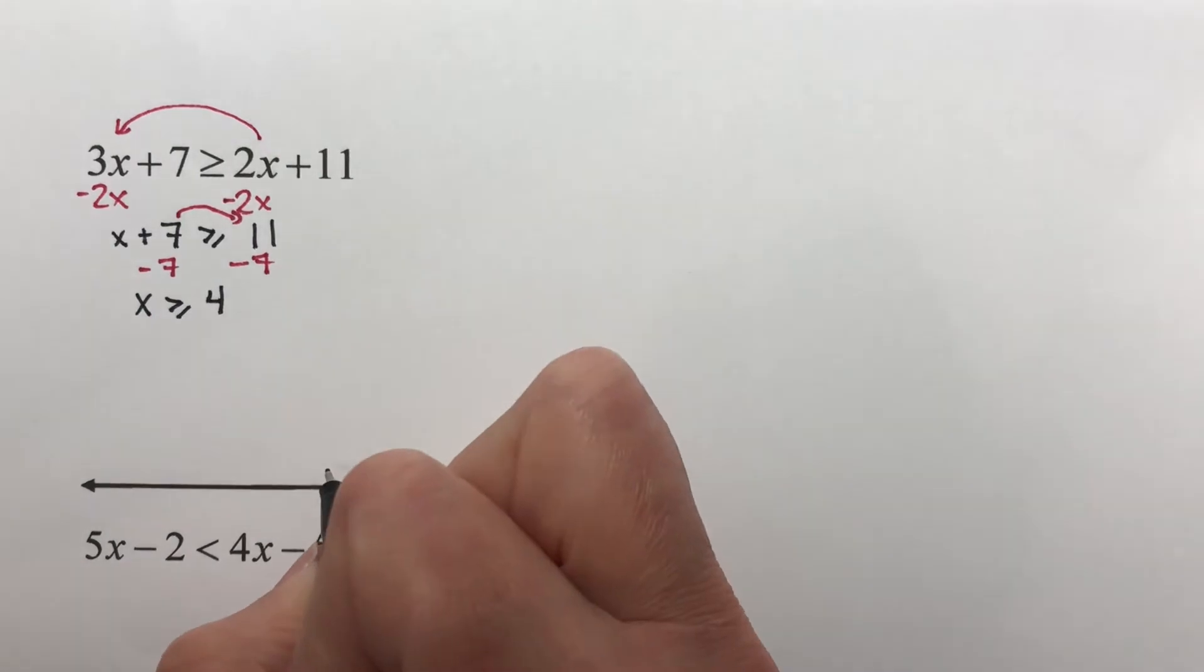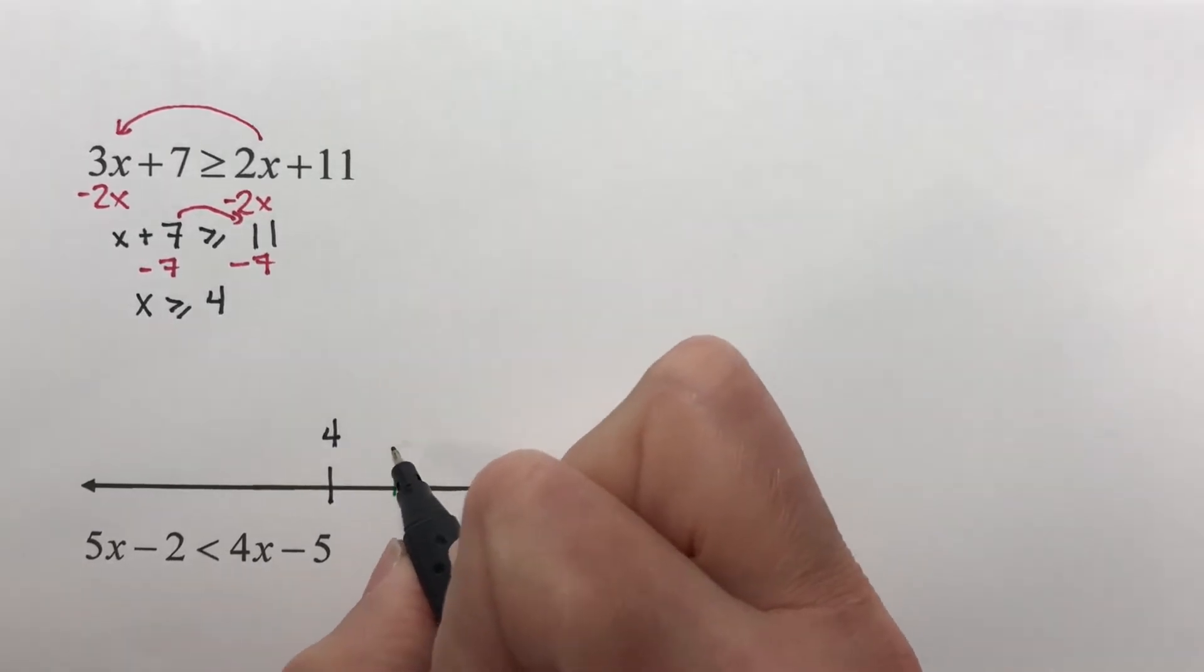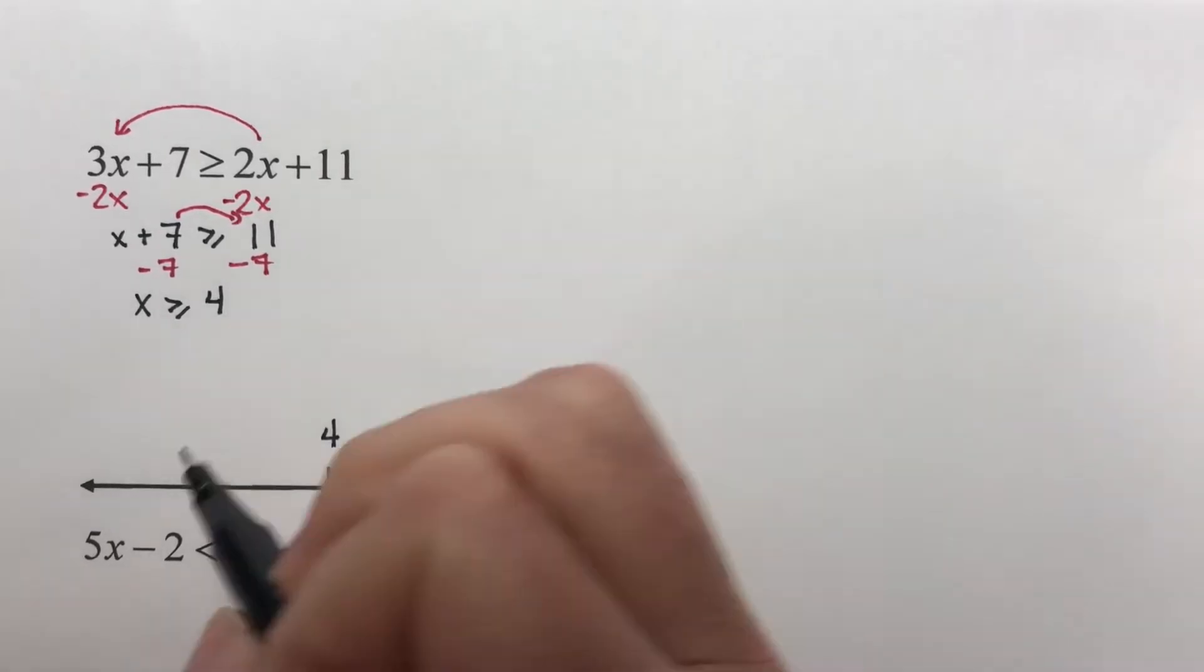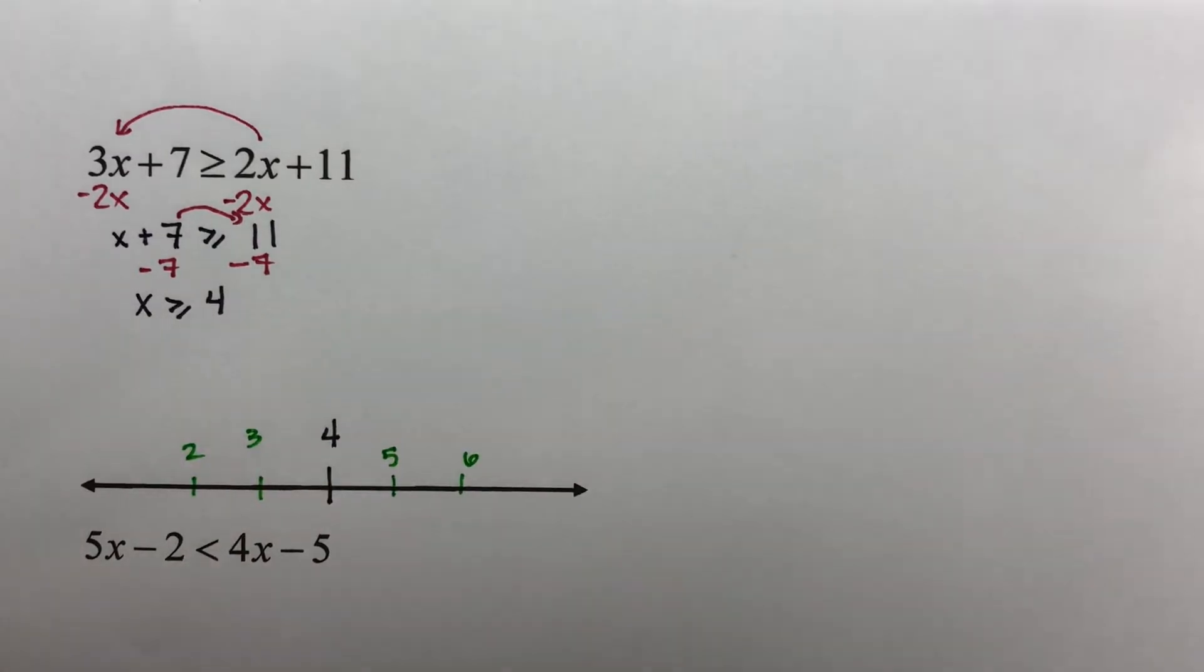So 4 on my number line. To do the graph, I have to have a 4. If it helps you, put in some other numbers and figure out which side you need to be shading on.